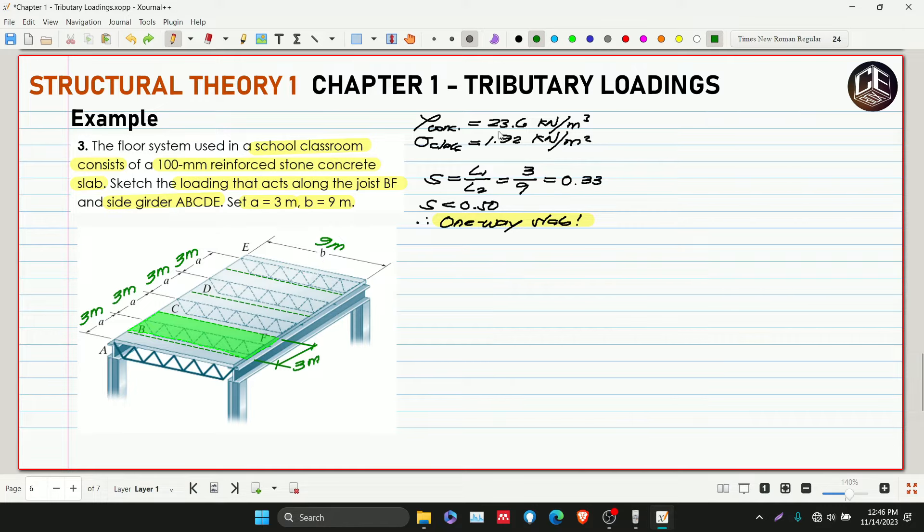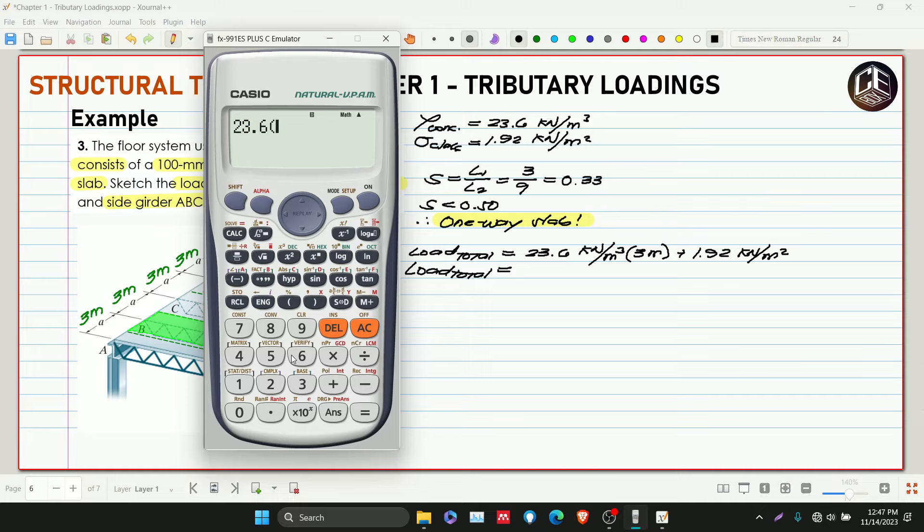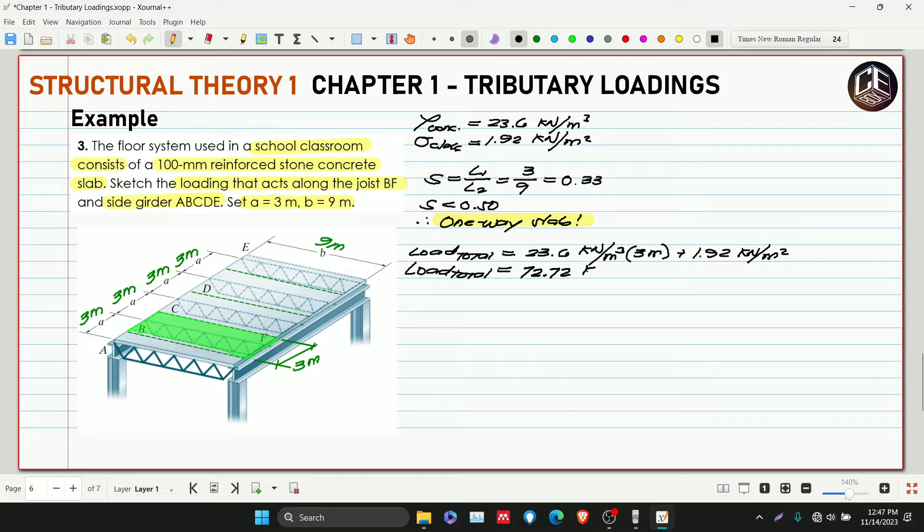What's the total loading? We need to convert our density into kilonewton per meter squared. The load total is equivalent to 23.6 kilonewton per meter cubed. We need to make it meter squared, so we multiply by 3 meters to cancel out and distribute the 23.6 along 9 meters. Then plus 1.92 kilonewton per meter squared. So 3.6 multiplied by 3 meters plus 1.92 gives us 72.72 kilonewton per meter squared.